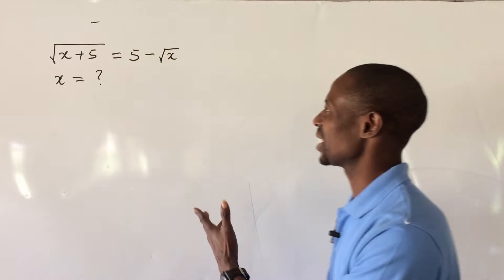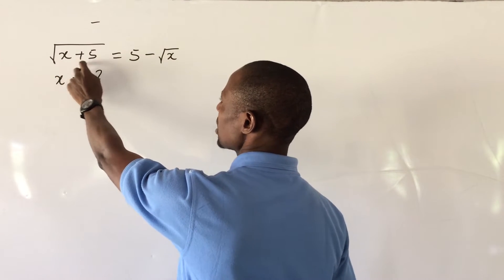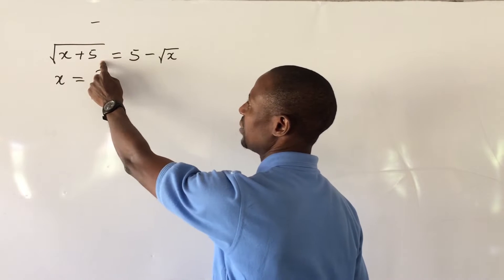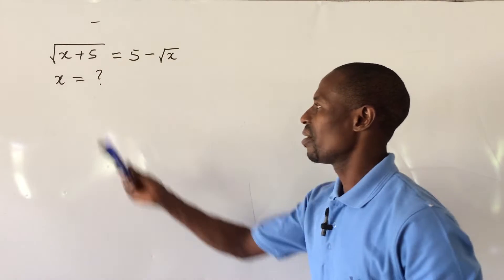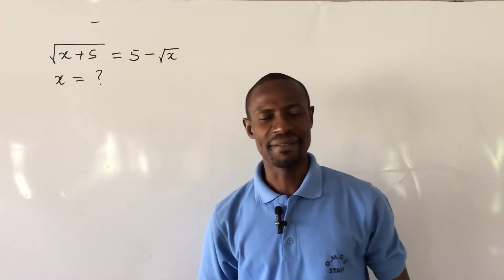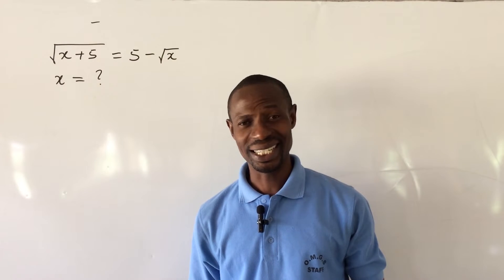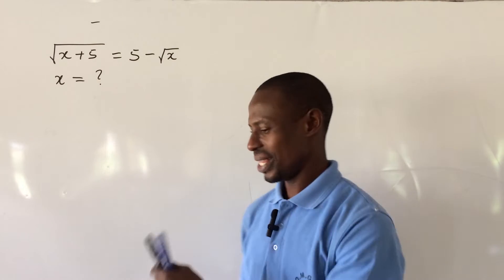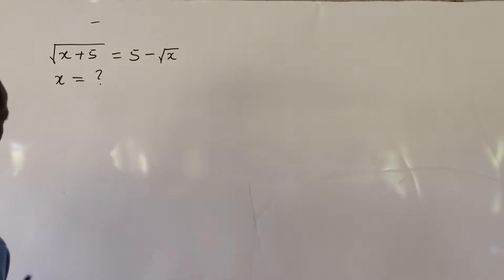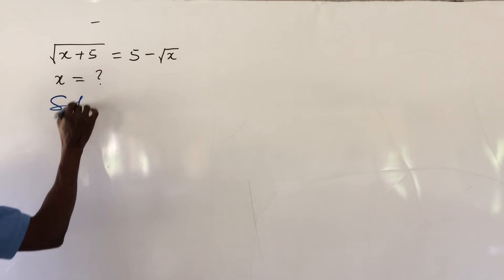So let's go into today's challenge. It says root of (x plus 5) equal to 5 minus root x. What is the value of x? As you can see, this is a radical equation. So how do we handle this? Let's go into the board and see.